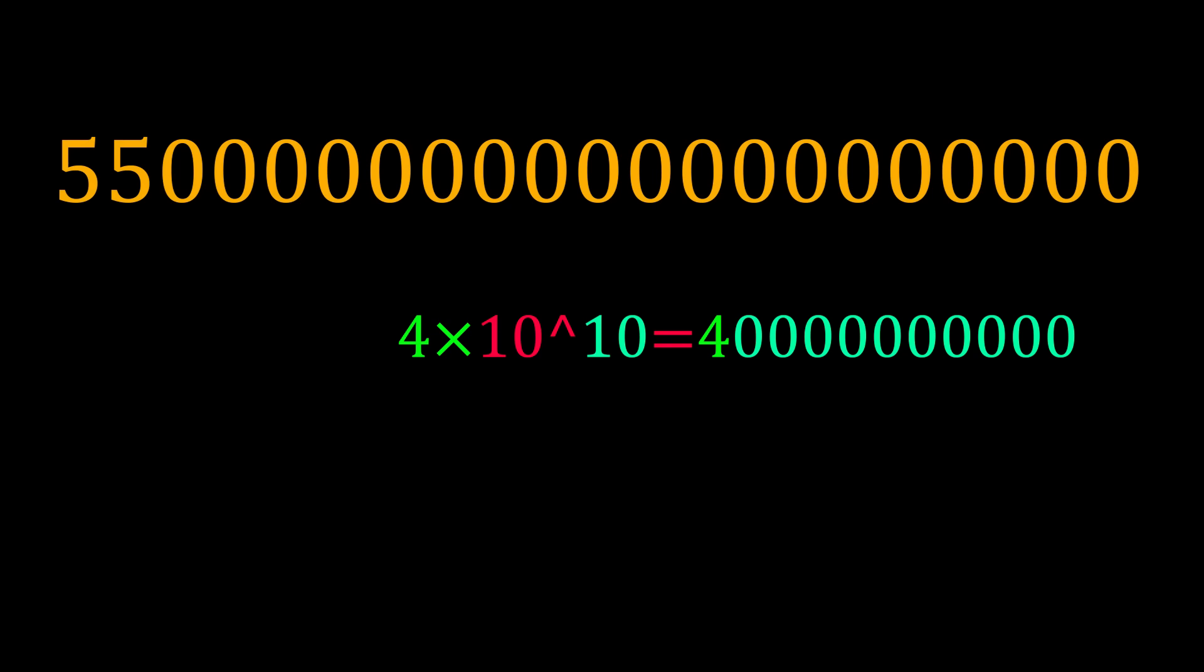So for this, we can write it as 55 into 10 to the power of 19. So this big number becomes just this small number.